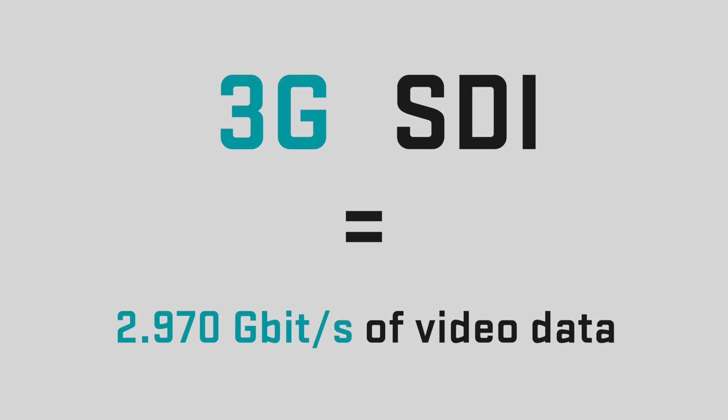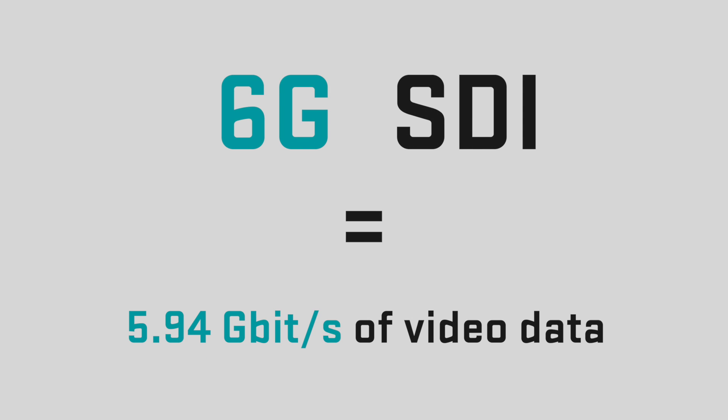So 12G, 3G — what are we talking about here? It's actually quite simple. All the numbers before the G are just referring to bit rates of video. So 3G SDI simply means it can transfer about 3 gigs of video data per second. 6G can transfer roughly 6 gigs per second, and 12G can transfer roughly 12 gigs per second.